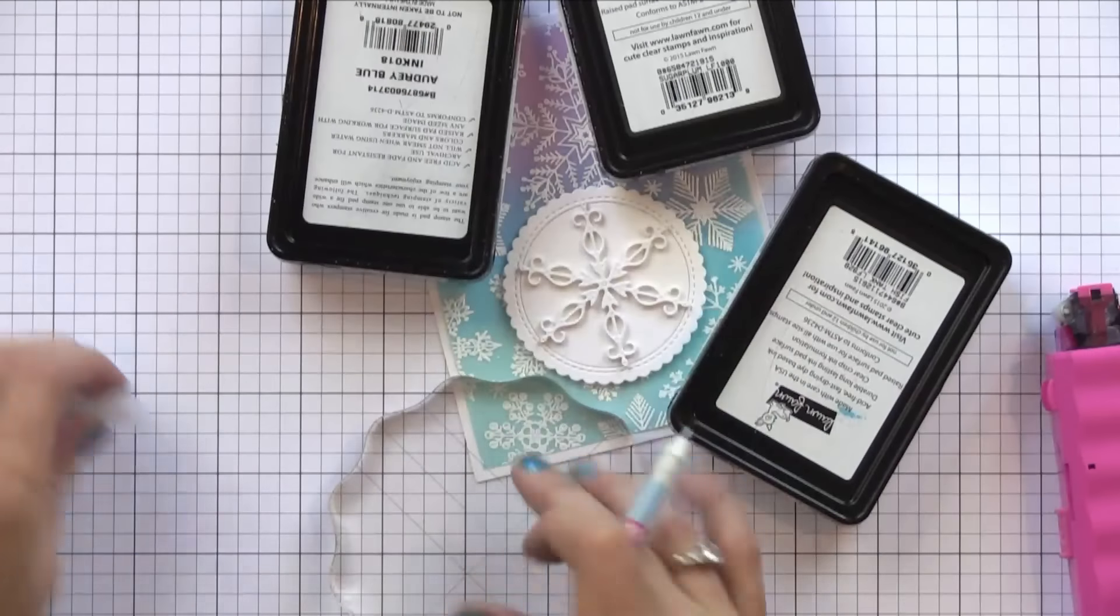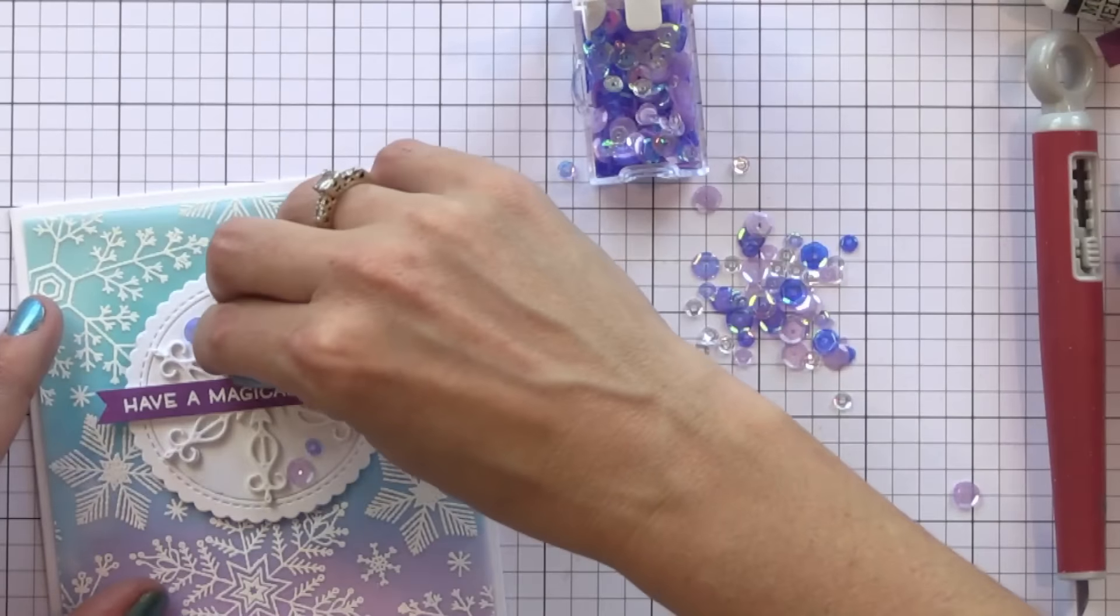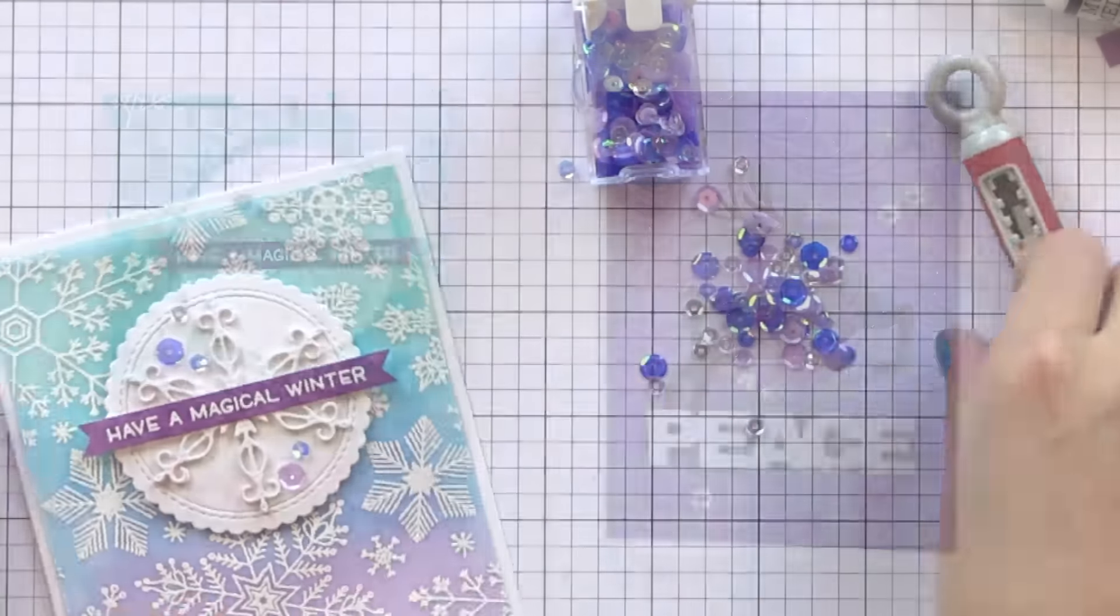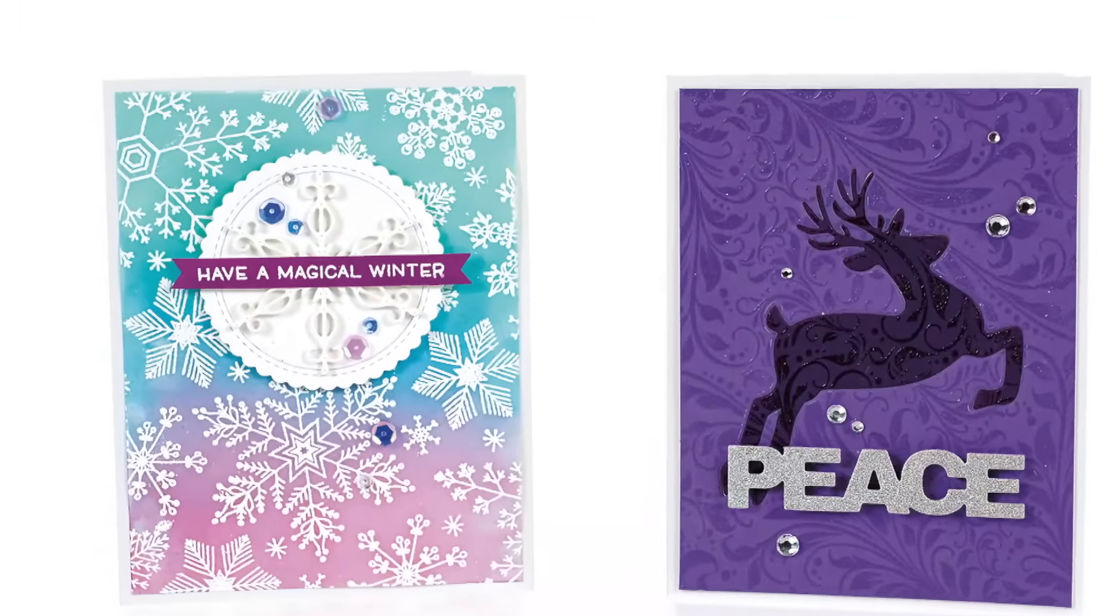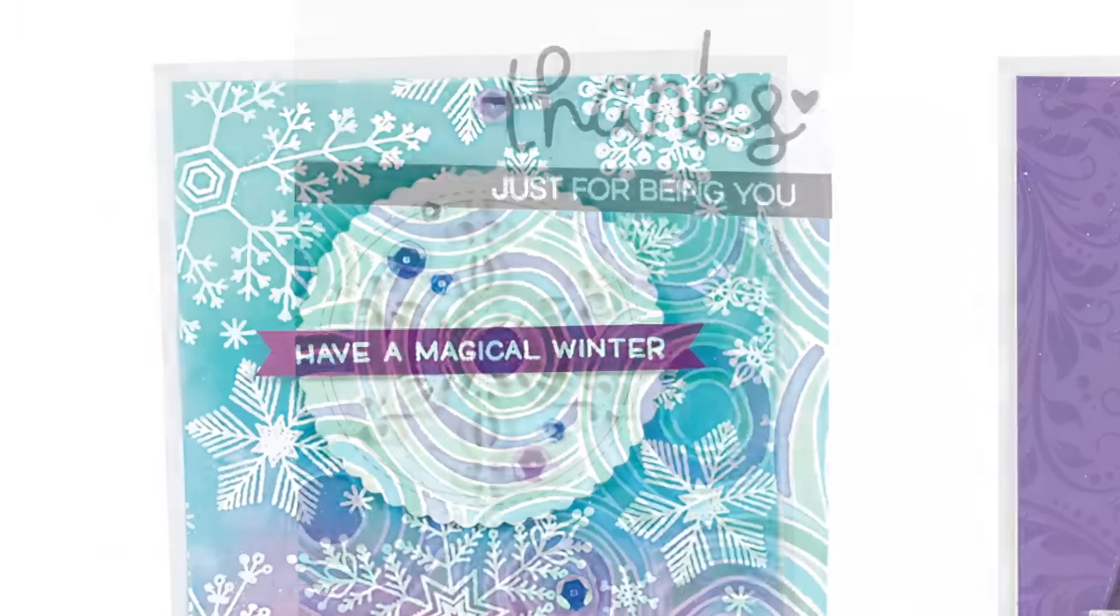To finish the card off, I added a sentiment that's white heat embossed on a purple cardstock strip and then I added a few sequins to it. This is one of those cards that you can change up for any holiday and just use different stamps and die cuts. So there's our first technique to create a soft background with vellum.